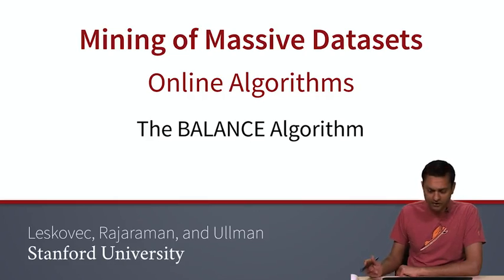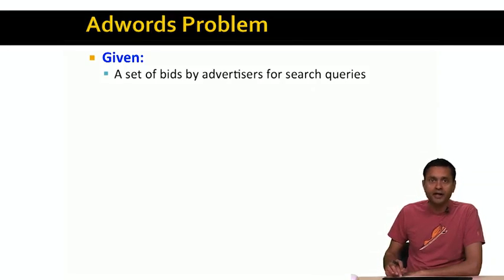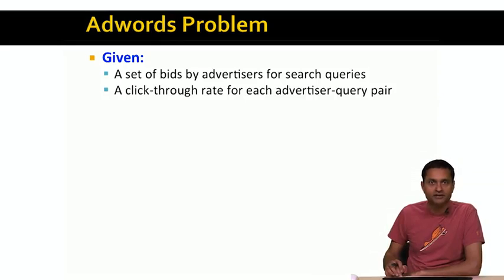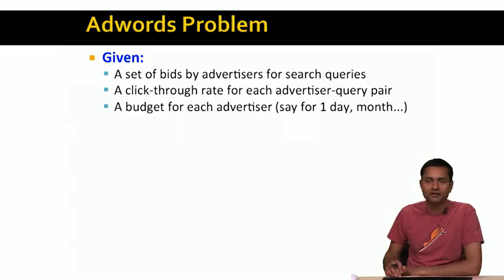To refresh your memory on what the AdWords problem is: we are given a set of bids by advertisers for search queries, a click-through rate for each advertiser-query pair, and in addition a budget for each advertiser. The budget could be for a day, or a month, or a year, or some period like this.